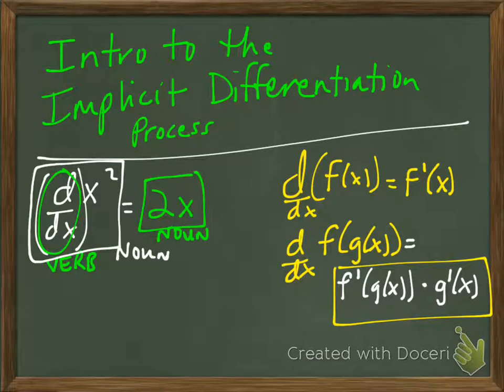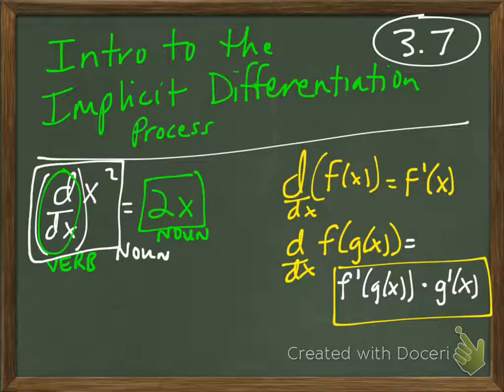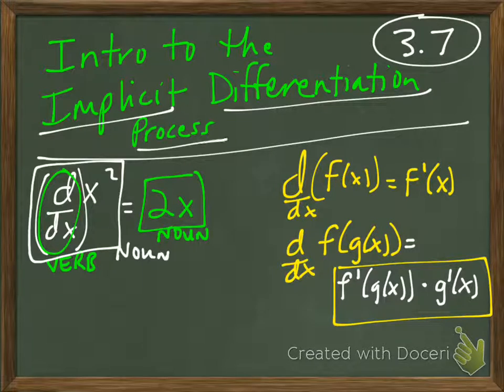Welcome. We're actually going to be doing a kind of an intro to section 3.7, the implicit differentiation process. Before we even get into that in the next video, I wanted to just clarify a couple concepts — some new notation that you're going to be seeing so that you're not confused when you see one entire example worked out. This is just clarifying concepts and clarifying the notation.